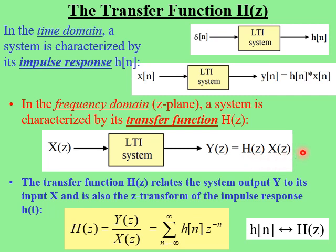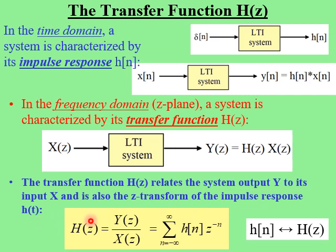This is a result of the so-called convolution property of the z-transform. The transfer function H of z relates the system output Y to its input X. In fact, the transfer function is defined as the ratio of Y of z over X of z. But more specifically, the transfer function H of z is just the z-transform of the impulse response H of n.